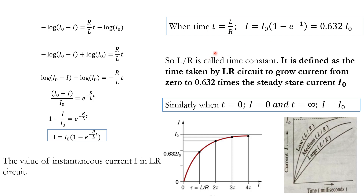At t equal to L/R, the current reaches 63.2% of the maximum steady-state current I₀. The time constant is defined as the time taken by the LR circuit to grow the current from 0 to 63.2% of the maximum value or steady-state current I₀. This definition is very important.